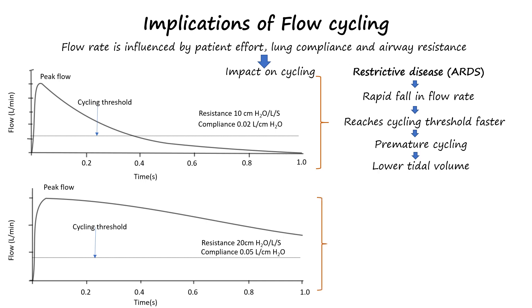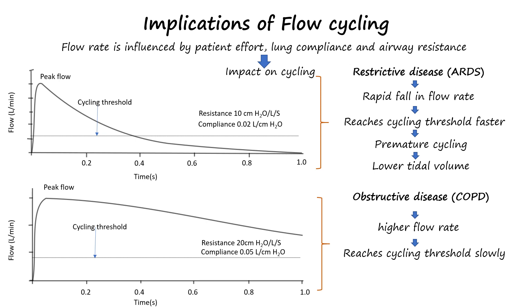In contrast, the patient with emphysematous lung disease may have very high lung compliance with greater flow using the same ventilator settings. As a result, the flow won't reach the prescribed threshold percentage, leading to prolonged breath or delayed cycling. It is therefore important to understand the lung conditions of the patient before setting the cycling threshold.